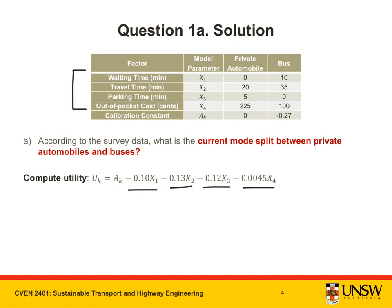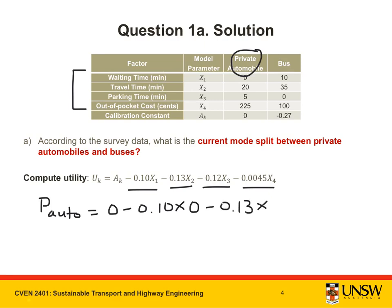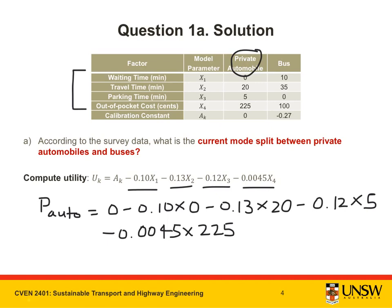Let's now compute the utility for each mode. The utility of traveling by private automobile is equal to the calibration constant, which is 0, minus 0.1 multiplied by the waiting time (also 0), minus 0.13 multiplied by the travel time (20 minutes), minus 0.12 multiplied by the parking time (5 minutes), minus 0.0045 multiplied by the out-of-pocket cost (225 cents). This gives a utility value of minus 4.2125.